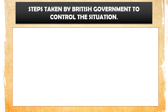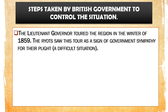The British government took some steps to control the situation, as they did not want to bring back the same situation as the Revolt of 1857. First, the Lieutenant Governor toured the region in the winter of 1859. This tour made the ryots very happy because they saw it as a sign of government sympathy — that the government understood the difficult situation of the cultivators.